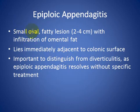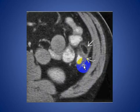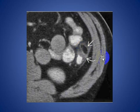Epiploic appendagitis presents as a small oval fatty lesion, about 2 to 4 cm, with infiltration of the omental fat, lying immediately adjacent to the colonic surface. It is important to distinguish from diverticulitis, as epiploic appendagitis resolves without specific treatment. On axial CT scan, we see an inflammatory mass lesion around the inflamed epiploic appendage — ring-shaped, fat density with a hyperdense ring.